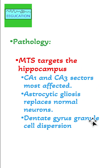Mesial temporal sclerosis targets the hippocampus, specifically involving the CA1 and CA3 sectors. Astrocytic gliosis replaces the normal neurons, and granule cell dispersion can be seen in the dentate gyrus.